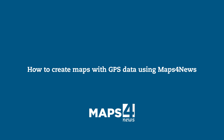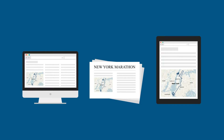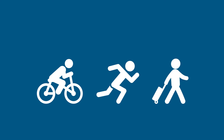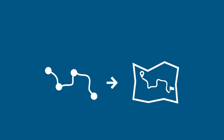How to create maps with GPS data using Maps for News. If you have a story that needs a route or track, such as cycling routes, marathons, travel journeys, or any story that unfolds across several places, Maps for News can easily create a map from GPS data.